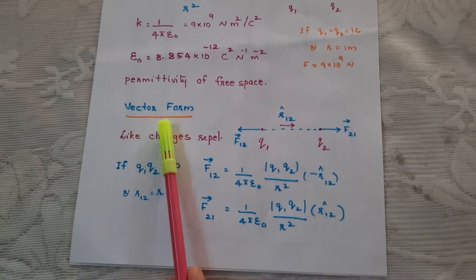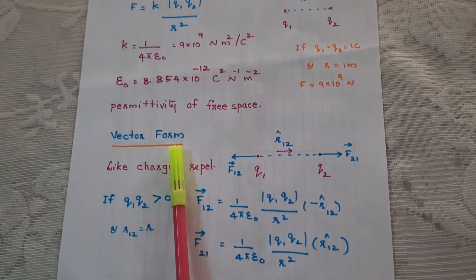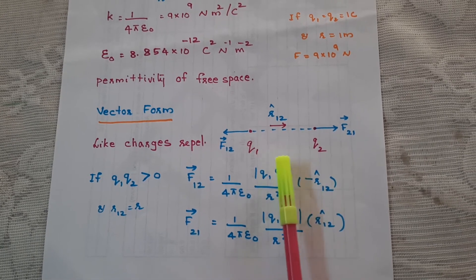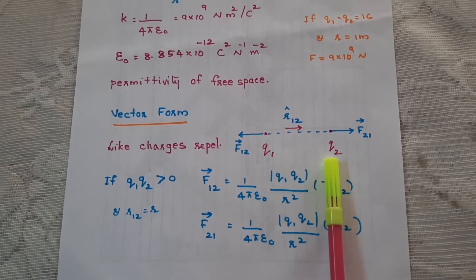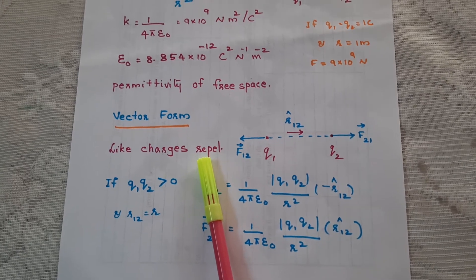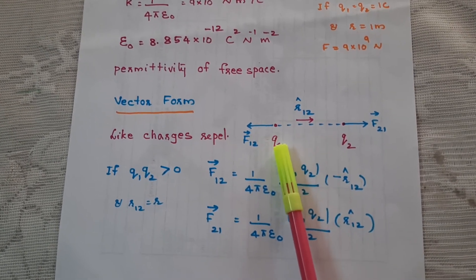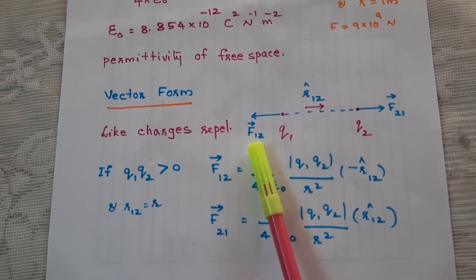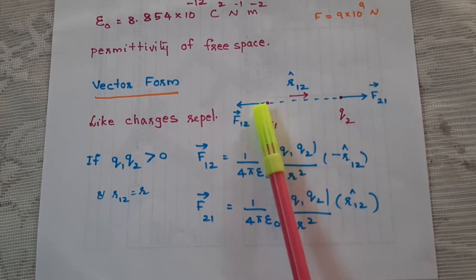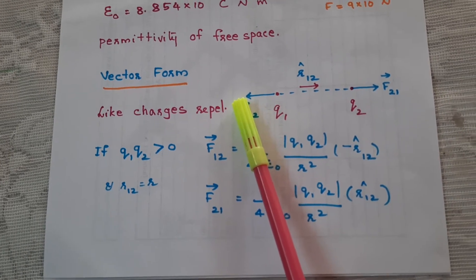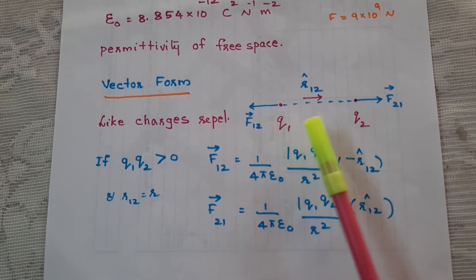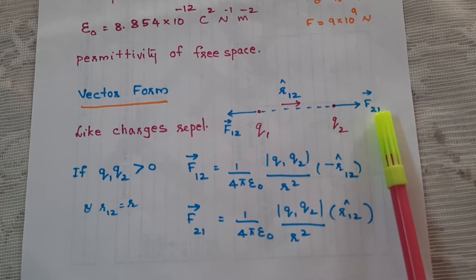Since force is a vector quantity, let us write force in vector form. We are considering two charges Q1 and Q2, both either positive or negative — like charges. Like charges repel. So the force acting on Q1 by Q2, F1-2, acts along the line joining the charges and is directed away from Q2 as the force is repulsive. Similarly, the force acting on Q2 by Q1, F2-1, is directed away from Q1.